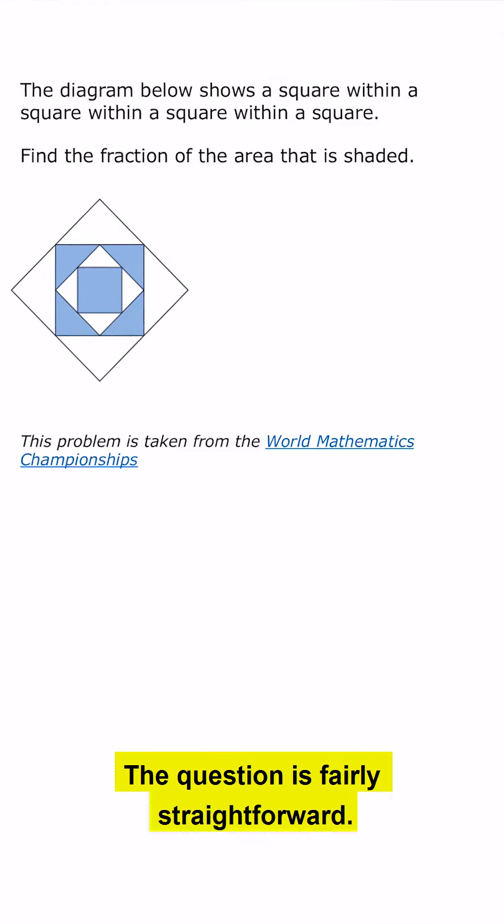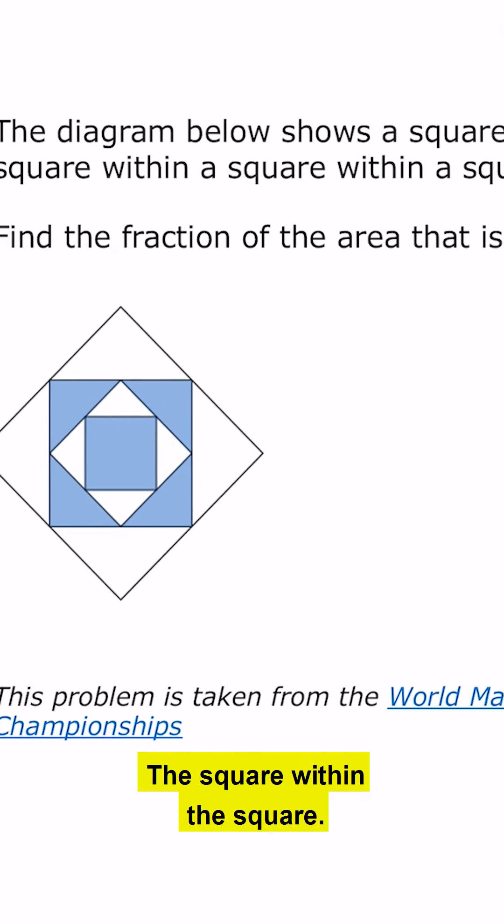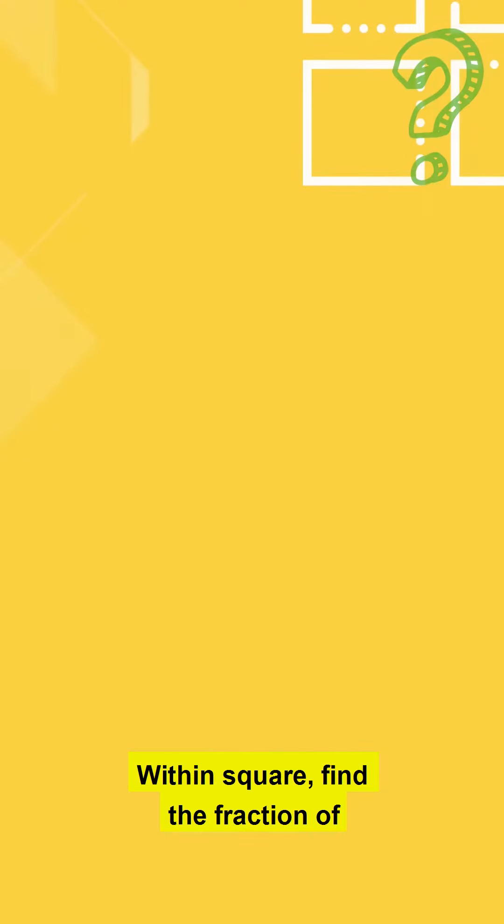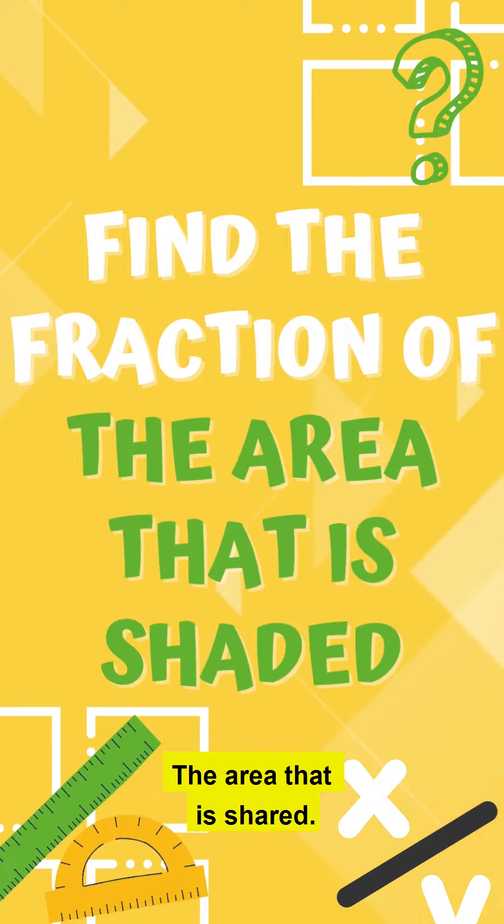The question is fairly straightforward. It says the diagram below shows a square within a square within a square. Find the fraction of the area that is shaded.